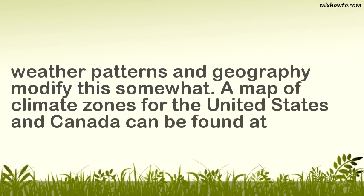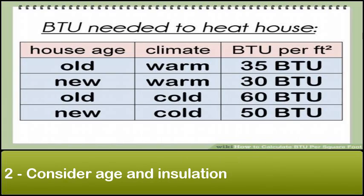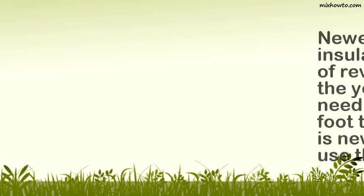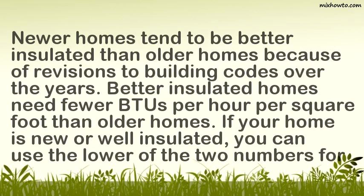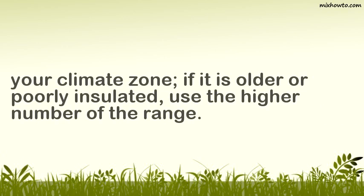Consider age and insulation. Newer homes tend to be better insulated than older homes because of revisions to building codes over the years. Better insulated homes need fewer BTUs per hour per square foot than older homes. If your home is new or well insulated, you can use the lower of the two numbers for your climate zone; if it is older or poorly insulated, use the higher number of the range.